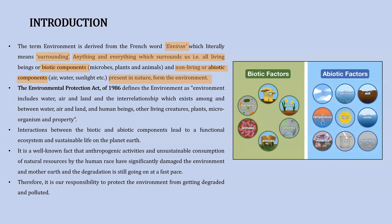The Environmental Protection Act that came in 1986 defined the term environment as: environment includes water, air, and land, and the interrelationship which exists among and between water, air, and land, as well as human beings, other living creatures, plants, microorganisms, and property.